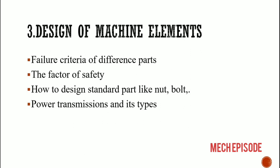The third part is design of machine elements. The design of machine elements contains failure criteria of different parts, the factor of safety, how to design standard parts, and power transmissions. The factor of safety is the ratio of ultimate stress to the working stress. The factor of safety is always greater than one.